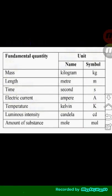The fundamental quantities we have are mass, length, time, electric current, temperature, luminous intensity, and amount of substance, which rounds up to seven fundamental quantities.